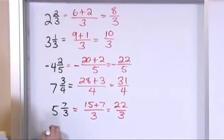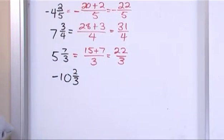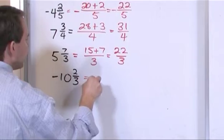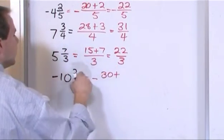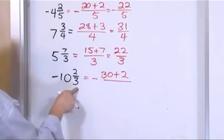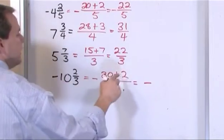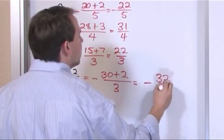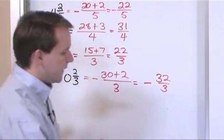What if you have negative ten and two-thirds? Well you have a negative sign here so just leave it out front and then work with the numbers. Ten times three is thirty, plus the two from here, divided by the three from down here. So you'll have negative thirty-two over three. Negative thirty-two over three and that is the fraction that's completely equivalent to this guy right here.